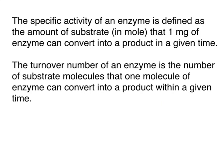Before we get started, let's have a look at some definitions. The specific activity of an enzyme is defined as the amount of substrate — in moles — that one milligram of the enzyme can convert into a product in a given time. The turnover number of an enzyme is the number of substrate molecules that one molecule of the enzyme can convert into a product within a given time.